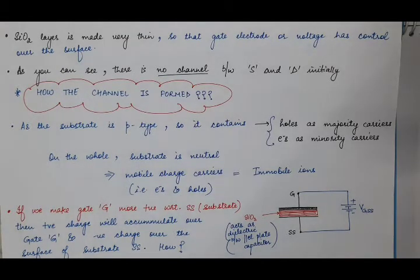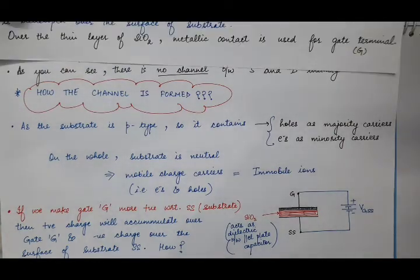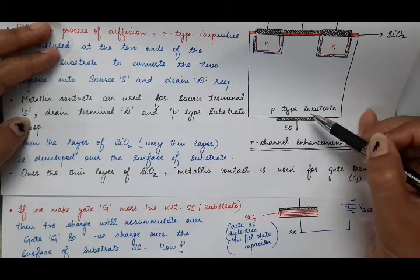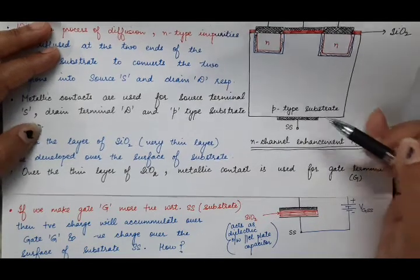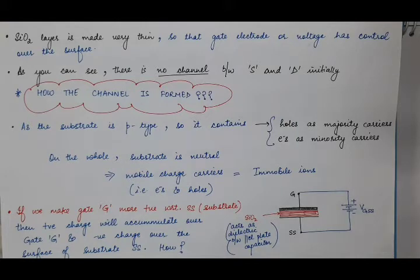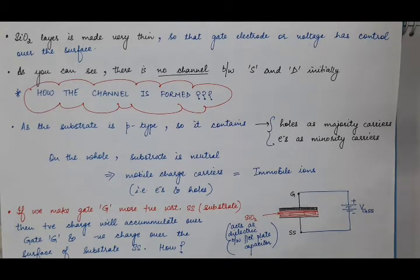In case of N-channel enhancement MOSFET, our substrate is P-type. In P-type material, holes are the majority carriers and electrons are the minority carriers. The P-type substrate is neutral on the whole, but it contains holes as majority carriers and electrons as minority carriers. Being neutral means the number of mobile charge carriers — electrons and holes — is equal to the number of immobile ions.